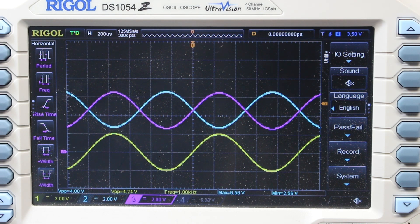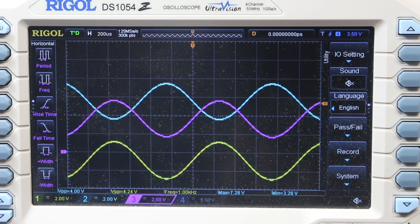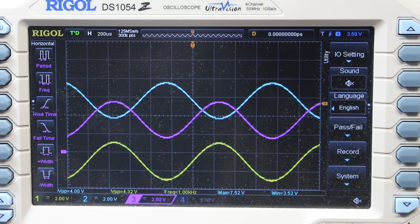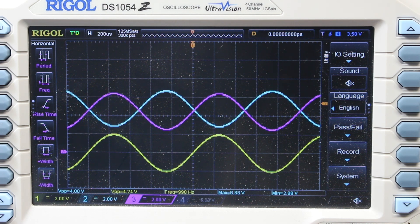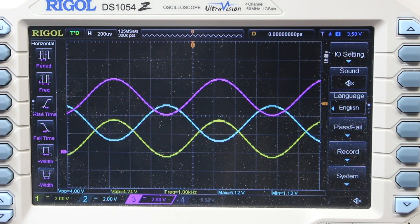To show that the response goes all the way to DC, I can dial a DC offset into the function generator, and the traces move up and down accordingly. So we have DC response.